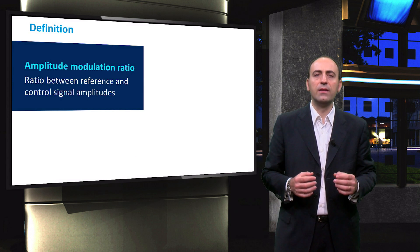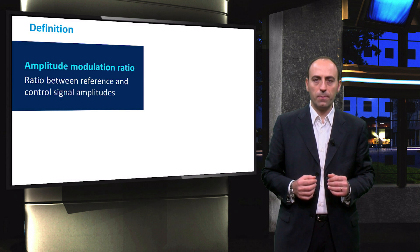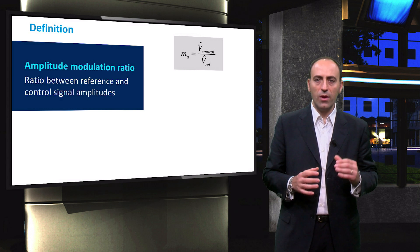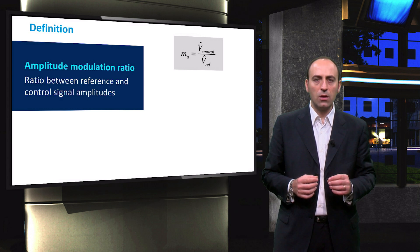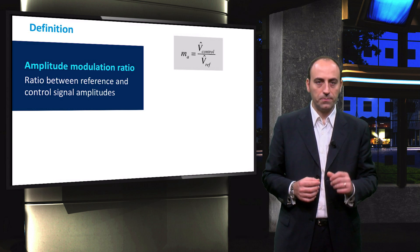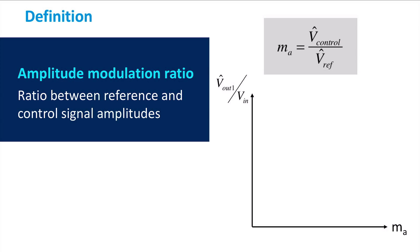To describe the different operative modes of the PWM inverter, it is useful to define the amplitude modulation ratio. This is the ratio between the reference and control signal amplitudes. When talking about inverters, the signal considered is the voltage. It is possible to enumerate three modes of operation depending on how the ratio between input and output voltage change with the amplitude modulation ratio.